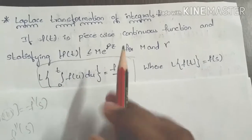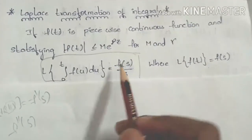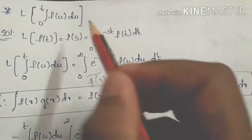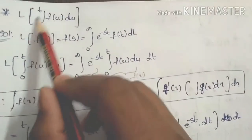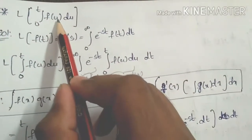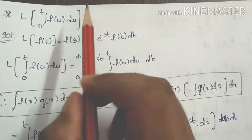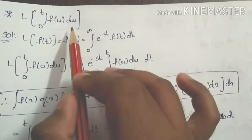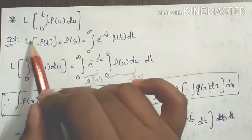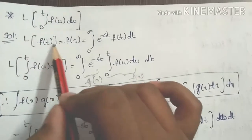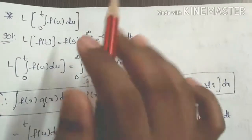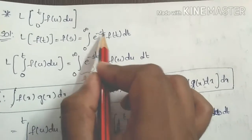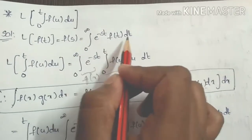This is the formula. Now we will give the proof. The proof of Laplace transform of the integral from 0 to t of f(u) du. We know that the Laplace transform of f(t) equals F(s), which is defined as the integral from 0 to infinity of e^(-st) f(t) dt.